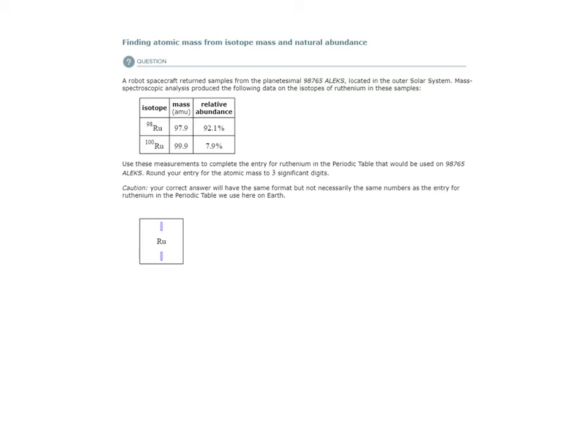So let's calculate the average atomic mass or atomic weight for ruthenium from the analysis of this sample. The average atomic mass or atomic weight is going to be equal to